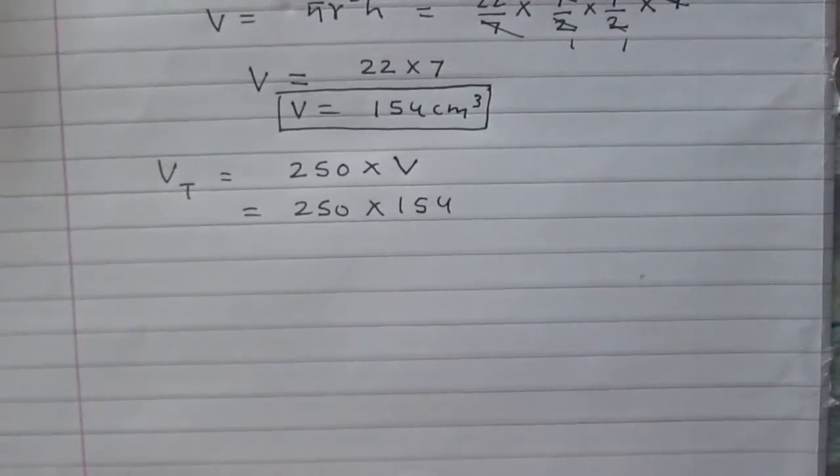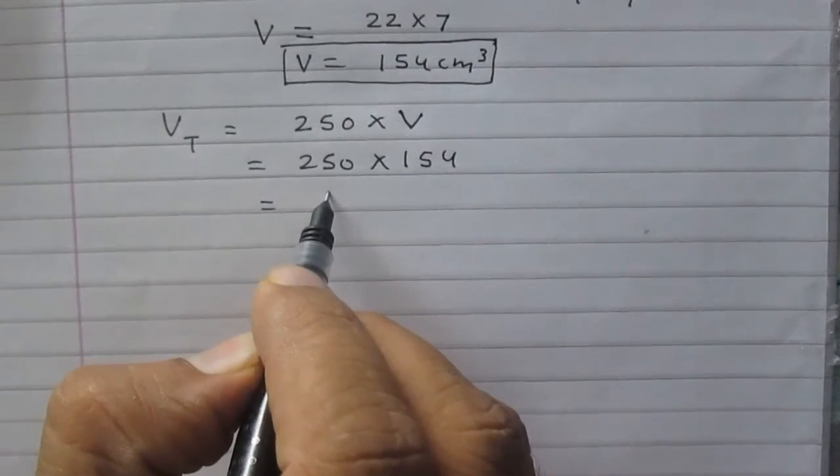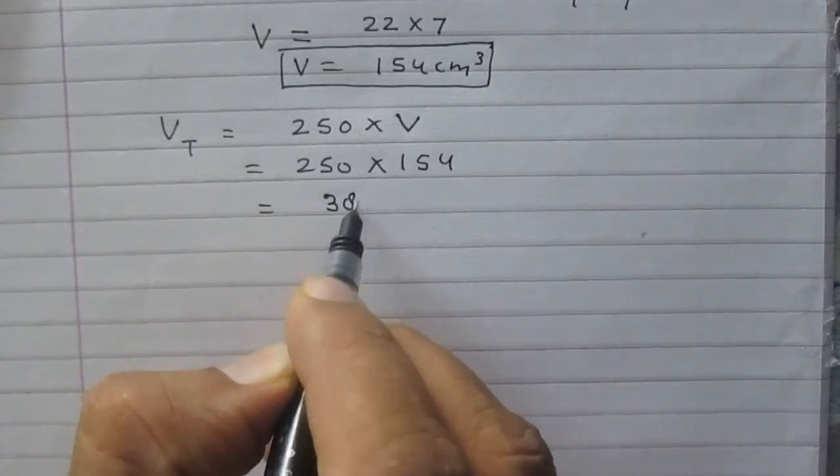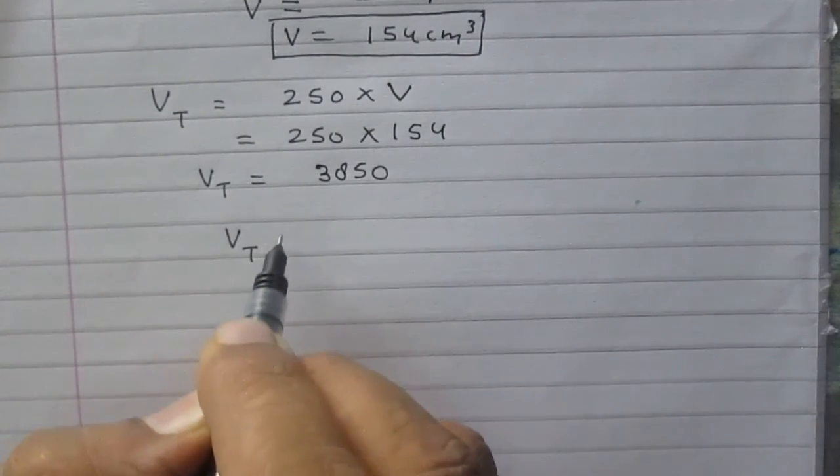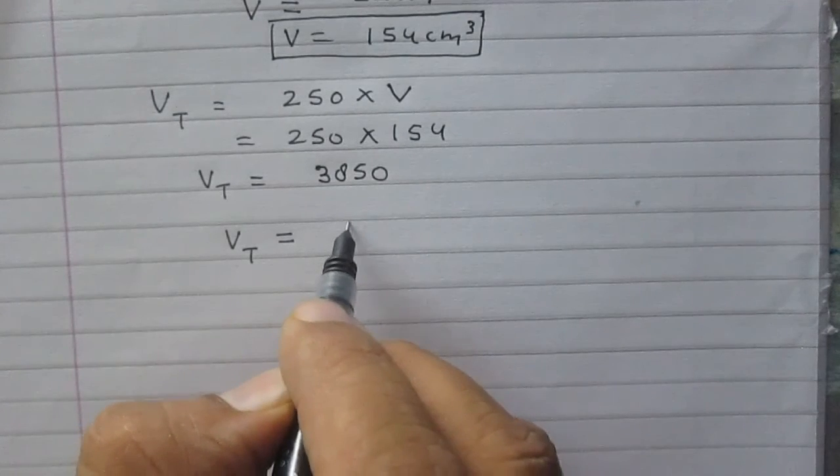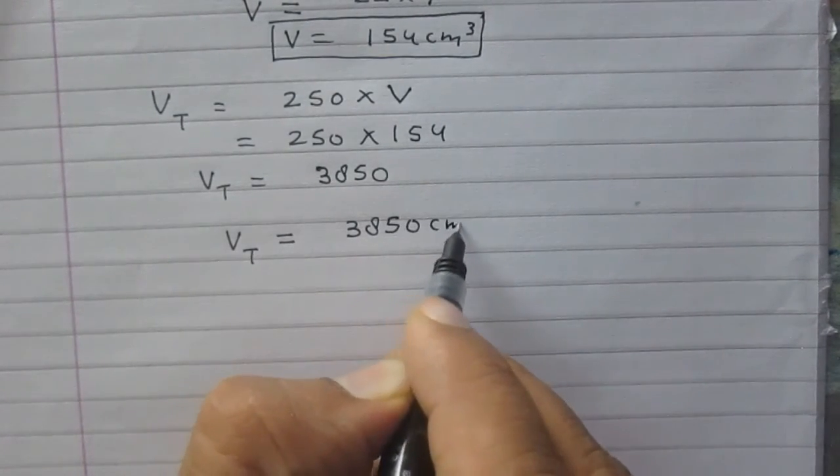After calculation, you will get 3850. So the total volume of soup prepared by the hospital is 3850 cm cubed.